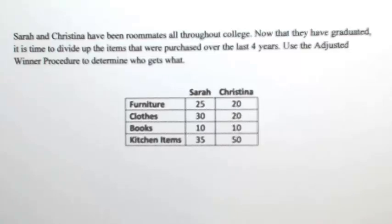The first step of the adjusted winner procedure is to give each person 100 points to distribute amongst the items. So that's already been done for us. Now what we're going to do is go through each item, and whoever gave it the most points, we're going to give it to them.